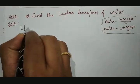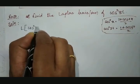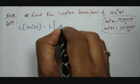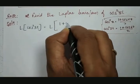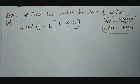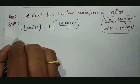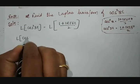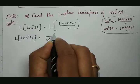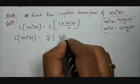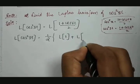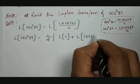Therefore, the Laplace transformation of cos squared 3t will be written as the Laplace transformation of (1 + cos 6t) divided by 2. That is equal to one-half taken as a common factor, then we take individual terms: Laplace transformation of 1, plus Laplace transformation of cos 6t.